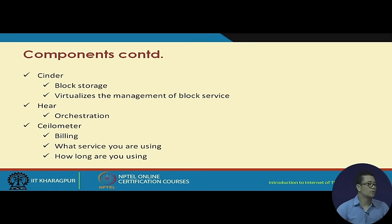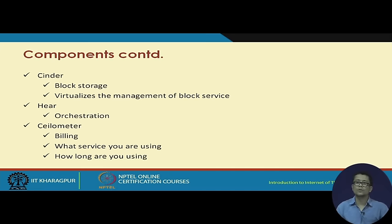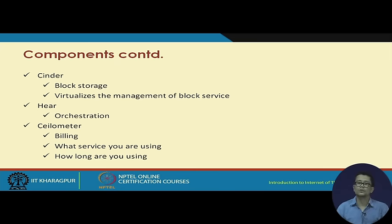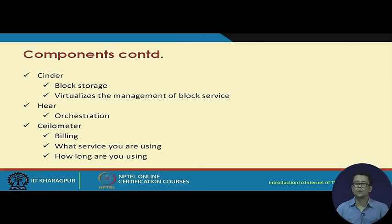Next is Cinder. Cinder is block storage — it is like an attachable type of storage. Then there is Heat, which provides orchestration. Next is Ceilometer — Ceilometer is the billing section. Through Ceilometer one can monitor what resources a user is using and for how long. This is helpful for cloud service providers to monitor which user is using which resources and for how long, and bill them accordingly based on time and type of resource used.